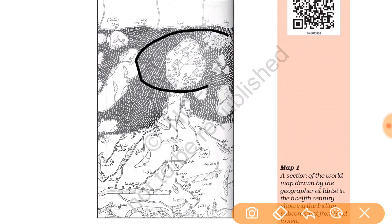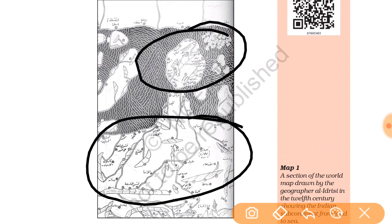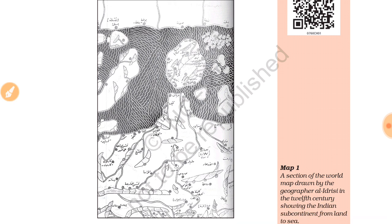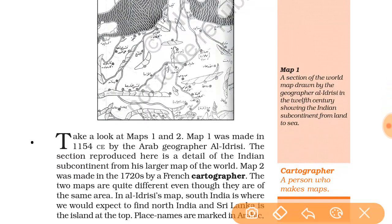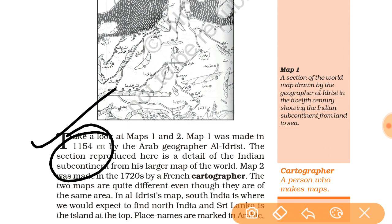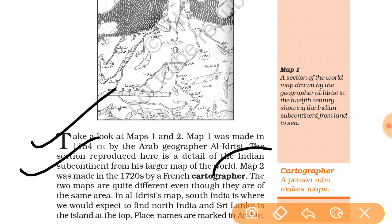In this map, Sri Lanka is at the top and the other part of India is below — this map is given in the opposite direction. Map one was made in 1154 CE by the geographer Al-Idrisi. The second section reproduced here is a detail of the Indian subcontinent from his larger map of the world.